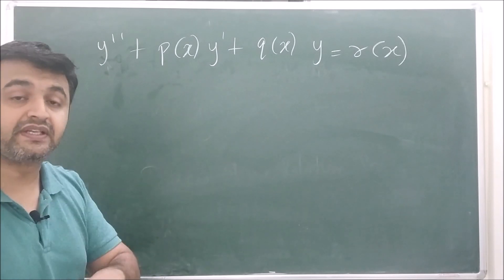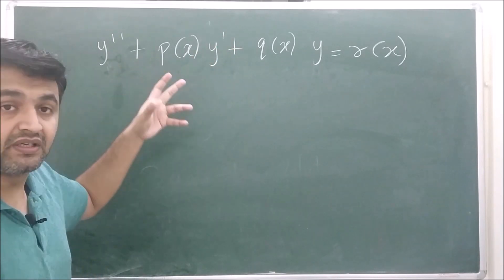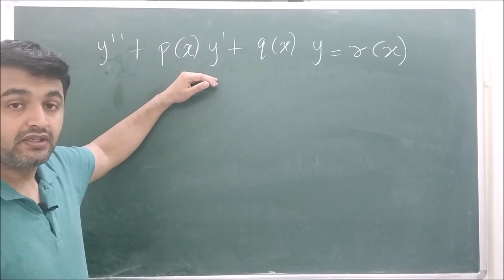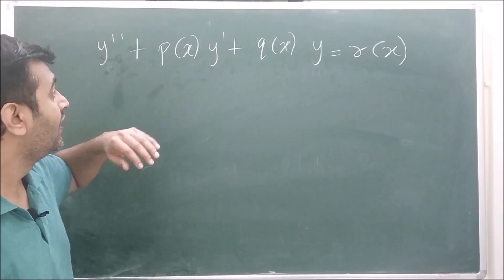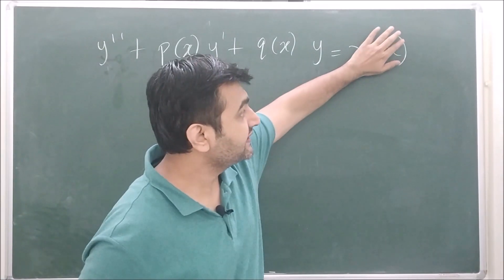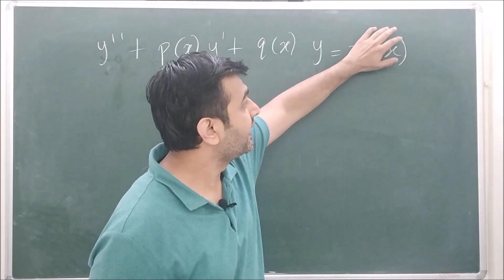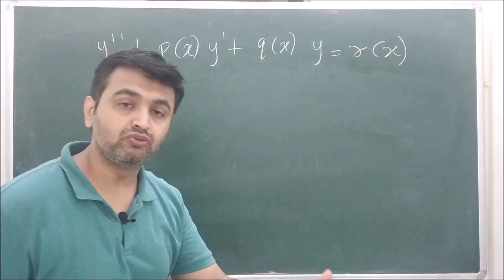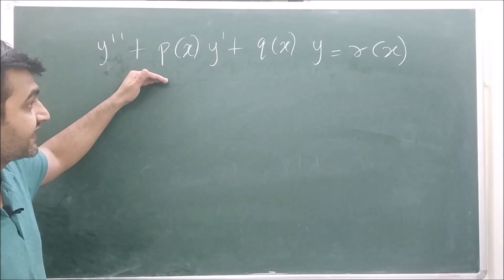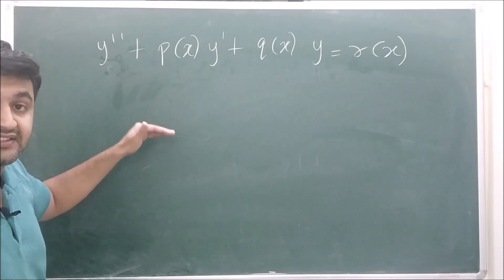Moreover, there is no product of the dependent variable and its derivatives — no y·y' or y'·y''. Whenever you have a differential equation of this form, we call it a linear differential equation. If the right-hand side is 0, we call it a homogeneous second order linear differential equation, and if the right-hand side is non-zero, we call it a non-homogeneous second order linear differential equation.